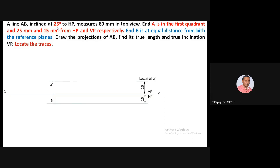The true inclination of 25 degrees is given and the top view length is 80 mm. Draw 80 mm in the top view, then extend the projector to identify the true length in the front view. Since only the inclination with respect to HP is given, use A-dash as center, mark 25 degrees with a protractor, and that inclination line will cut the projector at point B1-dash.